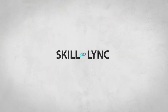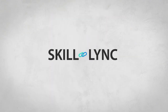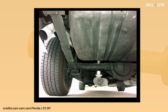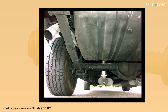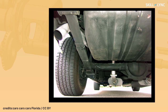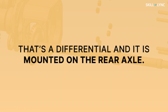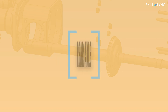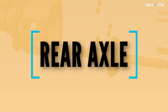Hey guys, hope you're all doing good and welcome back to the channel. I'm pretty sure many of you would have noticed the dome shape under a car or a truck. Well, that is a differential and it is mounted on the rear axle. In today's video, we'll be discussing the rear axle.